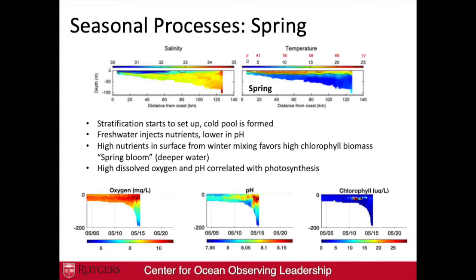Spring blooms are typically more offshore because freshwater input brings terrigenous material that makes the water murky, so phytoplankton favor offshore areas with better stratification and more light. You start seeing oxygen maximum layers along the thermocline where phytoplankton are producing oxygen. You also see a pH signal — relatively higher pH where phytoplankton are taking up CO₂, and lower pH in the bottom waters. So you're starting to see lower oxygen and lower pH in bottom waters through remineralization and the flip side of the photosynthesis process.